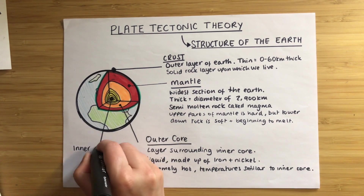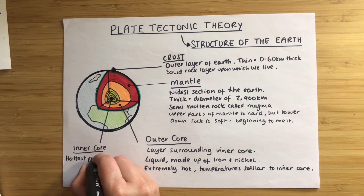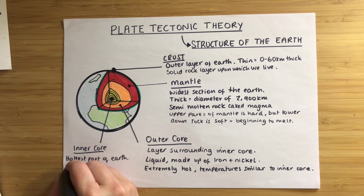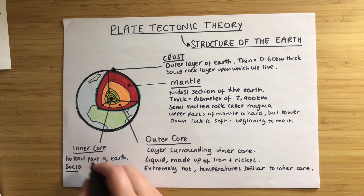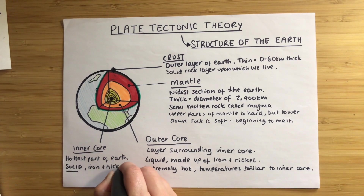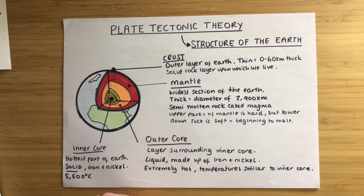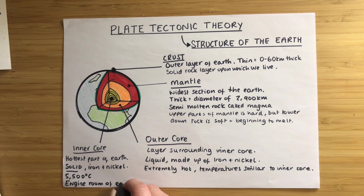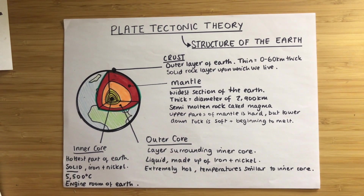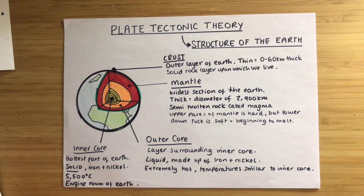And finally, the center of the earth: the inner core. This is the hottest part of the earth. The inner core is solid and, just like the outer core, is made up of iron and nickel. Temperatures in the inner core average approximately 5,500 degrees — that's the same temperature as the surface of the sun, and because of this huge amount of heat it's seen as the engine room of the earth. At GCSE we only really need to know that the inner core is solid, so don't worry about the various theories as to why.